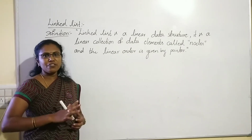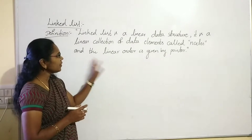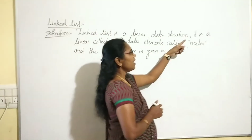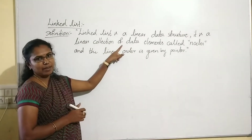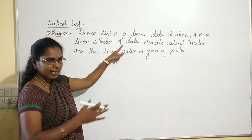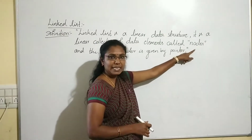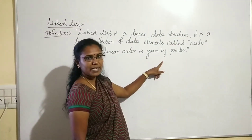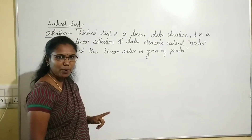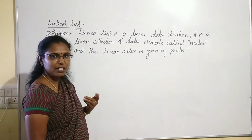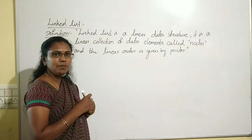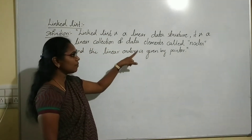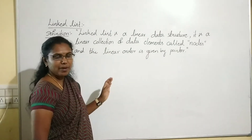Then, what is linked list? How to define linked list data structure? Linked list is a linear data structure. It is a linear collection of data elements called nodes, and the linear order is given by a pointer. This is the important definition point: it is a linear collection of data elements called nodes, and the linear order is given by a pointer.